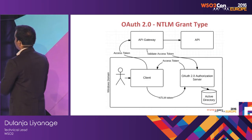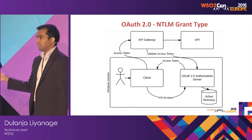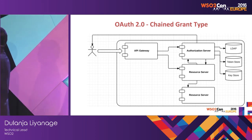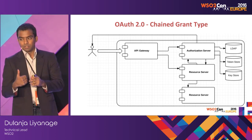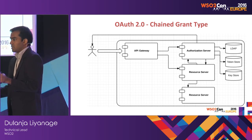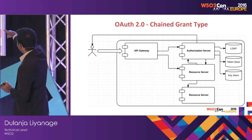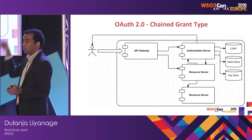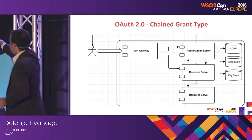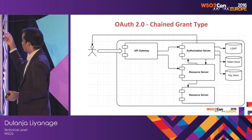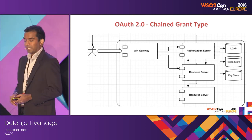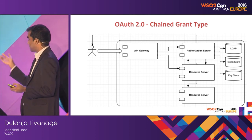All these grant types — SAML, JWT, and NTLM — are already out of the box supported in the WSO2 API management platform. There is also a chain grant type, where the first API that receives a request wants to access another API downstream on behalf of the same user. The first resource server can't use the same token to access the other resource server because that token is given to the client, not to the resource server. So the resource server sends that token to the other server and gets a new token for itself on behalf of that user. This can be done using a custom grant type.